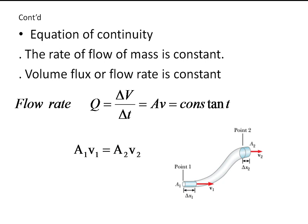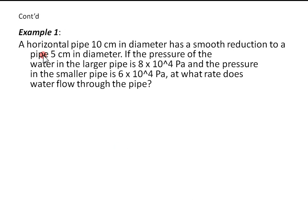Just to apply what we have discussed, let's see some examples. Example 1: a horizontal pipe 10 cm in diameter has a smooth reduction to a pipe 5 cm in diameter. If the pressure of water in the larger pipe is 8 times 10 to the power of 4 Pa, and the pressure in the smaller pipe is 6 times 10 to the power of 4 Pa, at what rate does the water flow through the pipe?